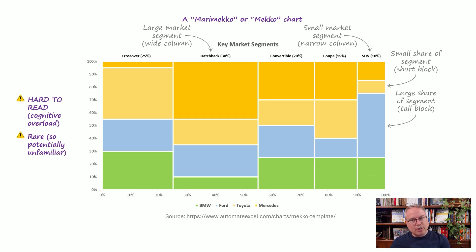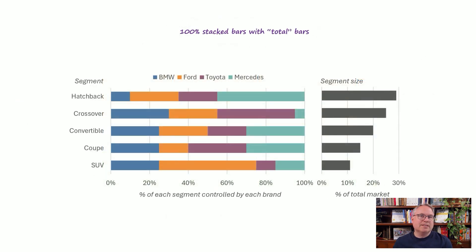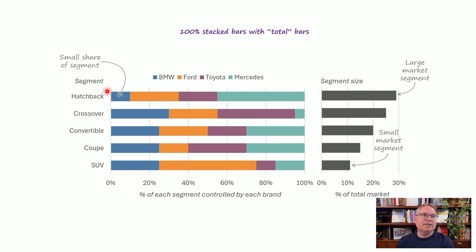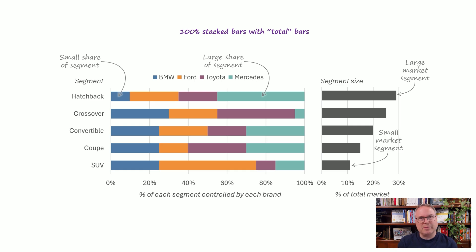Whenever there's a chart which requires a lot of cognitive effort, I always ask myself: is there maybe a simpler chart that might communicate the same thing? If these four insights in the gray text here are what I was trying to communicate, then maybe something like just a regular 100% stacked bar chart, with a total set of total bars beside it — I can see a lot of the same insights. I can see which market segments were large, which ones were small, and I get a breakdown of each segment by brand. Within hatchbacks, BMW had a small market share and Mercedes had a large market share within that segment. A chart like this can communicate these particular insights, probably with less mental effort, using chart types that people are already familiar with.